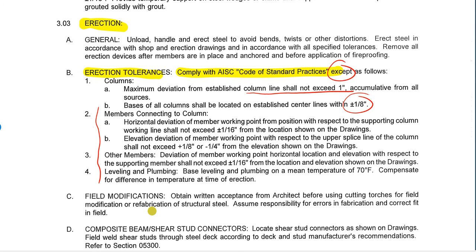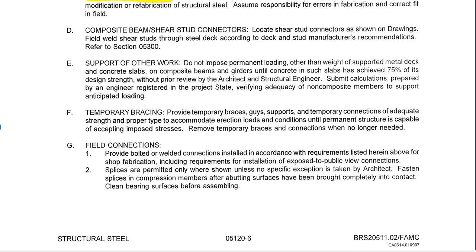Down here it talks about what happens if you need to do field modifications — that would go through the RFI process. There's also discussion of when you can actually start putting beams and girders in concrete, looking at the design strength of the concrete or whether it's been reviewed by the architect or structural engineer of record. Temporary bracing is the responsibility of the steel erector, and must be removed when no longer needed. Finally, there are specifics on how to do field connections, particularly where things are exposed to public view.